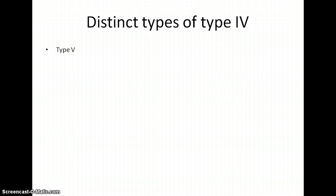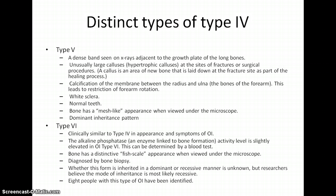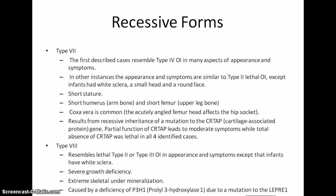Type 5 shows a dense band on x-rays adjacent to the growth plates of the long bones, and is the dominant form. Type 6 is recessive — only eight people have been identified with it, and it is a very mild form. Types 7 and 8 are also recessive forms, very similar to each other with just genetic alterations. Feel free to pause the video and take notes on the symptoms and distinctions of each type.